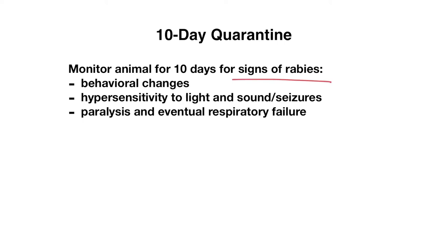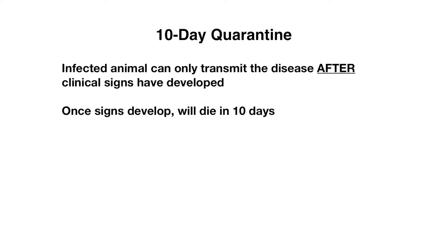Signs of rabies include behavioral changes like aggressiveness, hypersensitivity to light and sound, or seizures, and eventually paralysis with eventual respiratory failure and death. This can only be done for animals that have been captured or can be monitored, like a domesticated animal. An infected animal can only transmit rabies after clinical signs have developed, and once those signs develop, the animal will die within 5 to 10 days. So if an animal survives the 10-day monitoring period, it's very unlikely to have rabies.